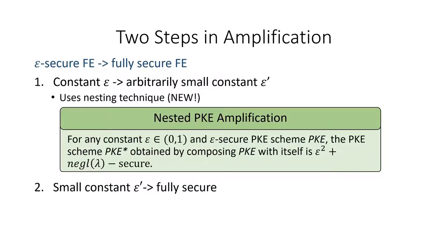For the first transformation, we nest our FE scheme — I will describe what nesting means in the context of FE shortly. To prove security, we use a new nesting technique for hardcore measures. This nesting technique also allows us to prove that a simple nesting of public key encryption — that is, where you encrypt the encryption of a message — provides the amplification we would expect. If the original PKE scheme was broken with probability epsilon, then the amplified scheme, formed by encrypting an encryption of a message, would be broken with probability roughly epsilon squared. Prior to this work, we did not know how to prove such amplification for simply nested PKE, and our new nesting technique can apply to other simply nested primitives as well.